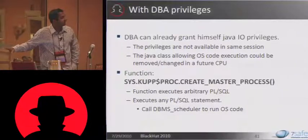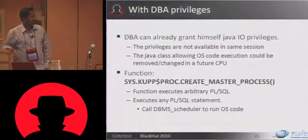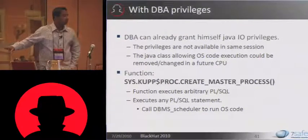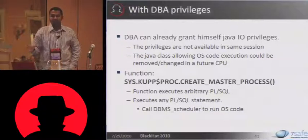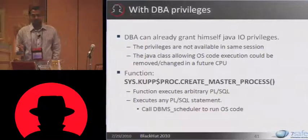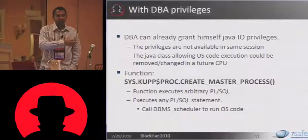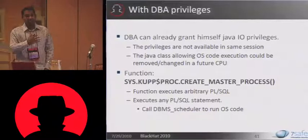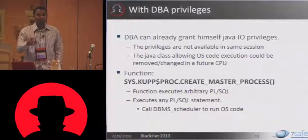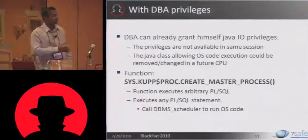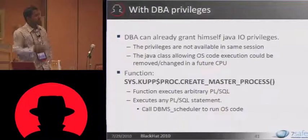In Oracle 11G at least — I'm not sure about 10G — this function actually allows execution of arbitrary PLSQL statements. Now, this is not really a flaw; this is a feature. So it's not like this is going to be patched. These two exploits — Java IO permissions and DBA permissions — are features. If your connection string user or your SQL injection has these two privileges, then you can call these two methods for executing OS code.